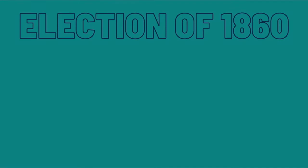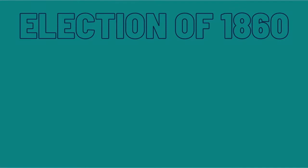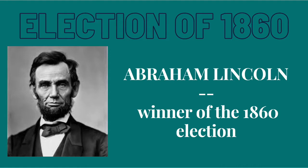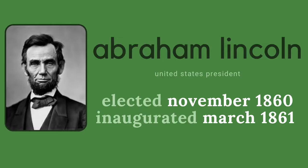Let's start with the election of 1860. The candidates were Republican Abraham Lincoln, Democrat Stephen Douglas, and Constitutional Union Party's John Bell. November 6, 1860 was election day in America. The results came out and Abraham Lincoln won with 180 total electoral votes, becoming the 16th President of the United States. He would spend the majority of his presidency dealing with the Civil War.